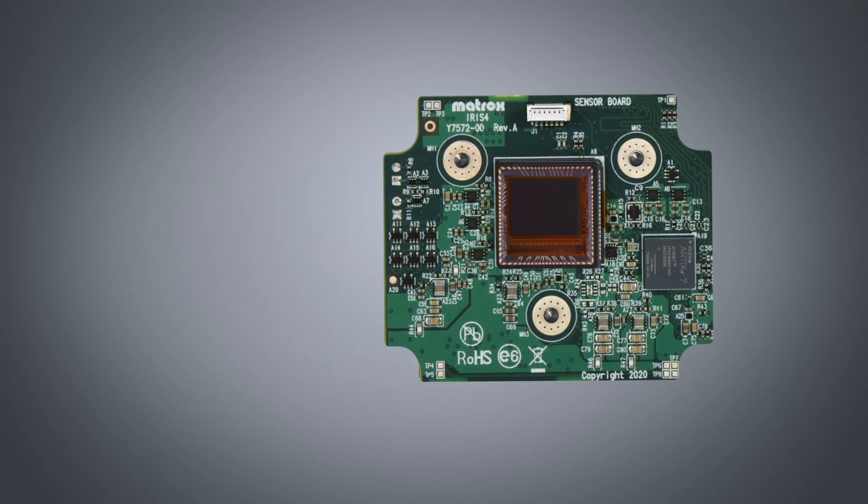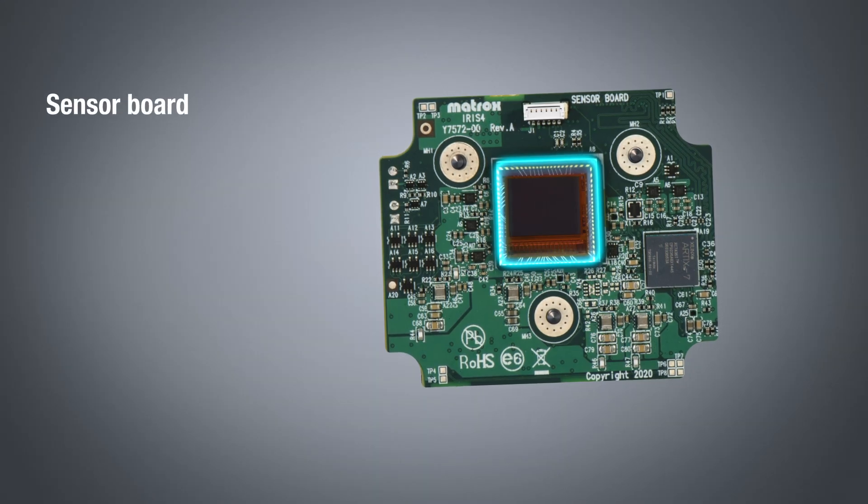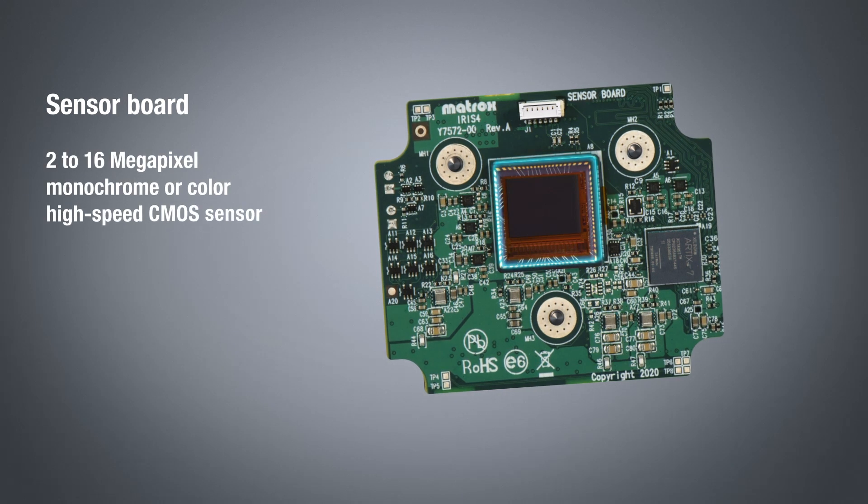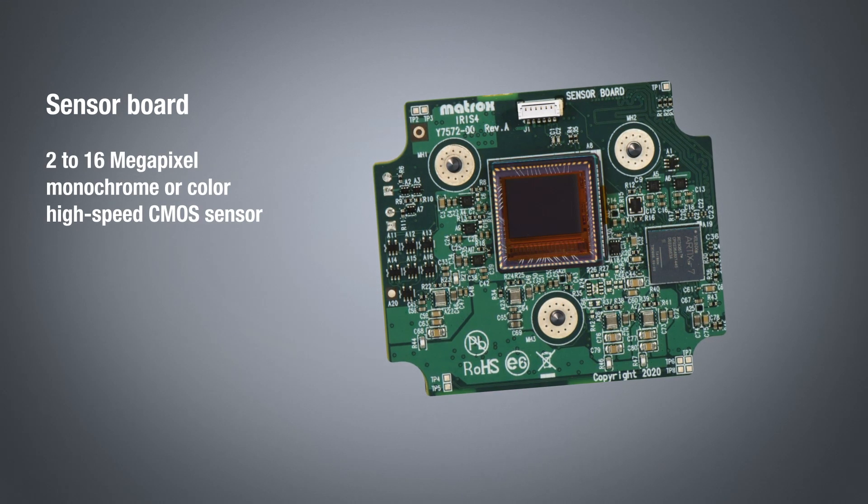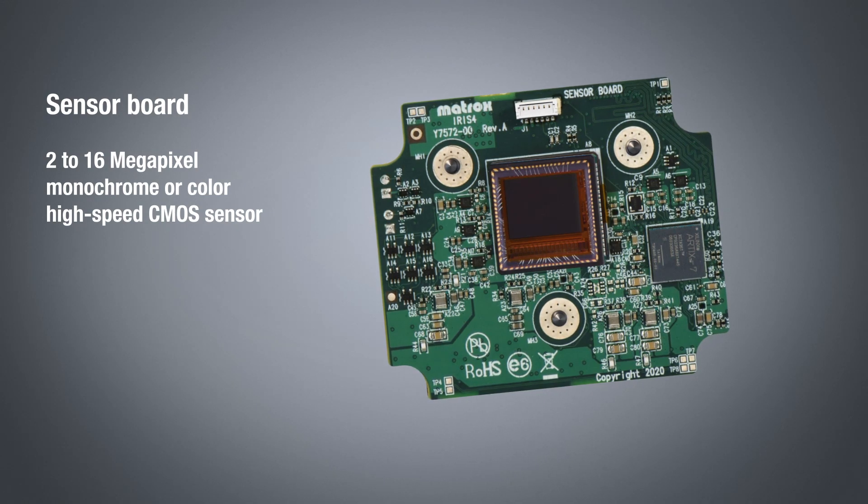Thanks to the increased power of the Intel Atom X6000 series processor, we were able to integrate higher resolution and faster image sensors. These image sensors come with resolutions ranging from 2 to 16 megapixel sensing in either monochrome or color.